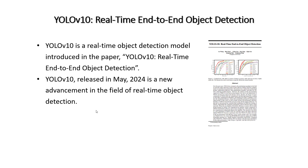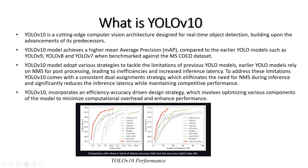YOLO V10, released in May 2024, is a new advancement in the field of real-time object detection. It addresses issues faced by previous YOLO models through model enhancements, architecture enhancements, and by addressing post-processing issues — specifically eliminating the need for NMS. YOLO V10 is a cutting-edge computer vision architecture designed for real-time object detection, built upon the advancements of its predecessors.